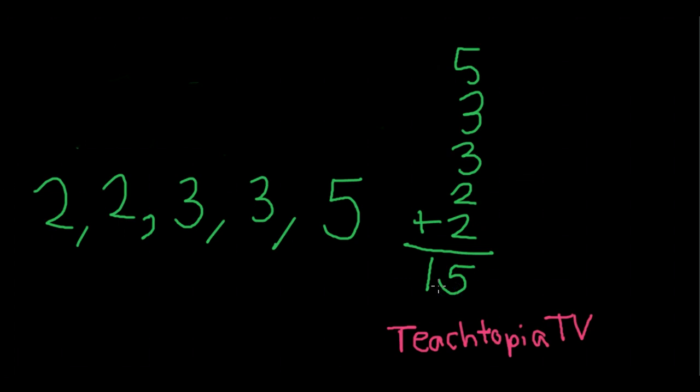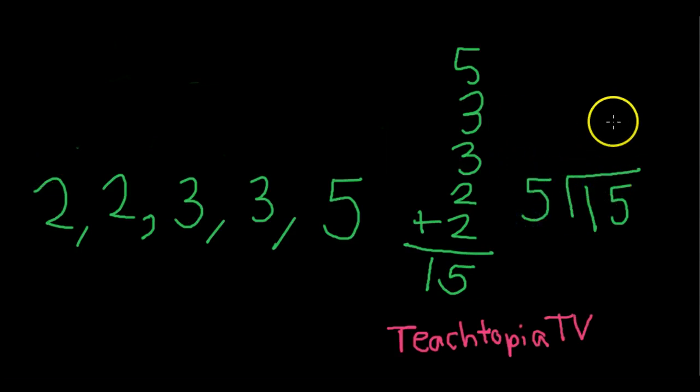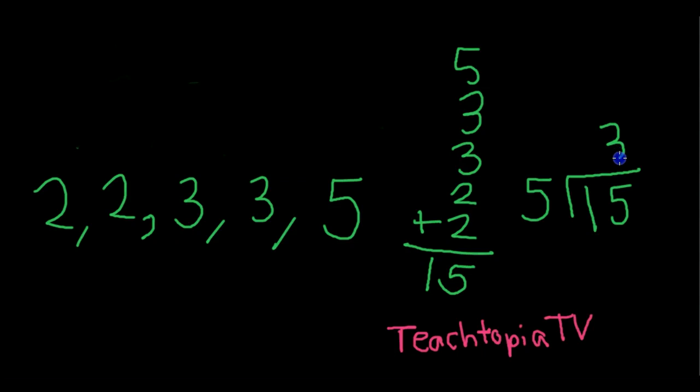Now how many add-ins total were there? 1, 2, 3, 4, and 5. So you simply take the sum of all the add-ins, which was 15, by the total amount of add-ins that we had in our data set, which is 1, 2, 3, 4, and 5. 15 divided by 5, and our quotient is 3.